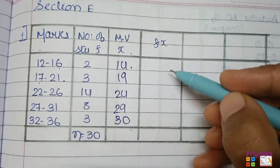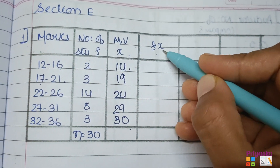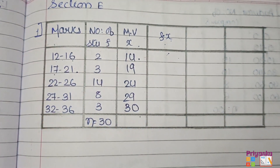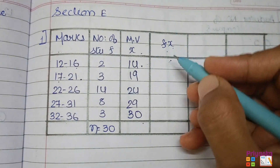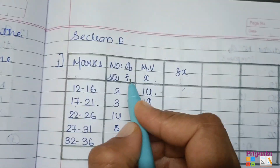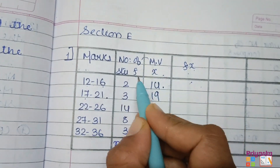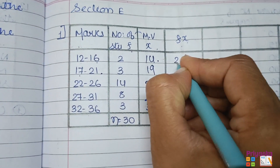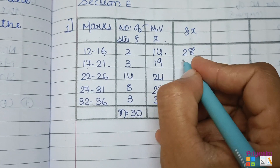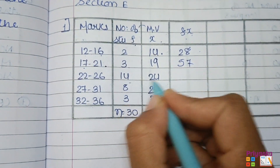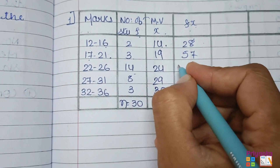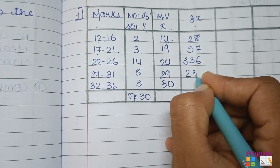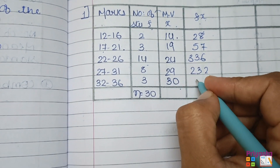This is how you find the mid value. The next column is fx. Remember, we need to calculate the mean first, so multiply the mid value column with the frequency column: 2 into 14 gives 28, 3 into 19 gives 57, 14 into 24 gives 336, then 8 into 29 gives 232.